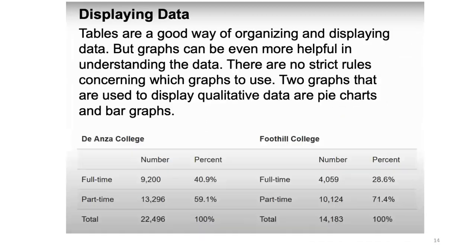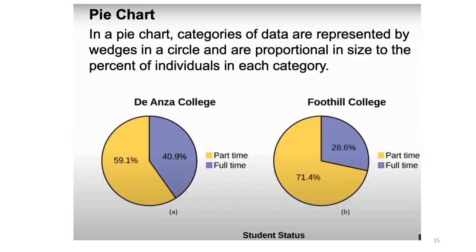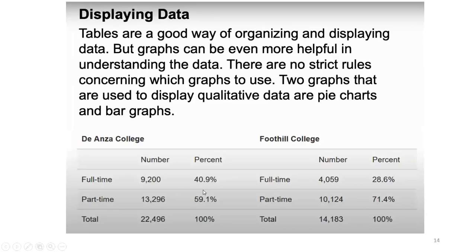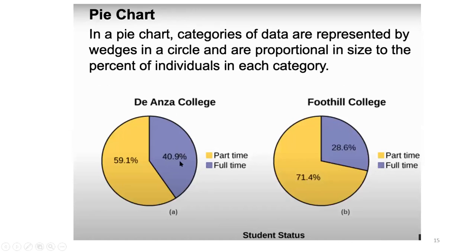In the pie chart, you take this data and put it in the chart. You can see that part-time is 59.1% and full-time is 40.9% — the total comprises 100%. For Foothill College, the percentages are also shown. You can easily see that part-time in Foothill College is more than De Anza College, and full-time is less — 40.9% versus 28.6% full-time, and 59.1% versus 71.4% part-time.